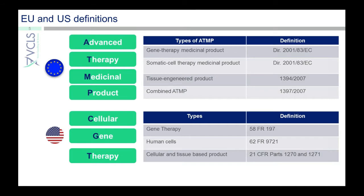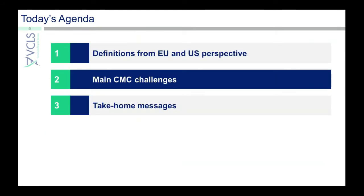In the US, the term used is CGT and refers to cellular and gene therapy. Now that we are on the same page regarding the definitions, we'll start presenting the CMC challenges. For those that have worked with small molecules or even with more traditional biologics, CMC is rarely on the critical path for development. With cell and gene therapy, things are a little different. We're often in an accelerated development where there is a result from a clinical perspective, and then CMC is on the critical path. We know the product works — now the question is, can we make it? My colleague Francois will be presenting our first CMC challenge today.